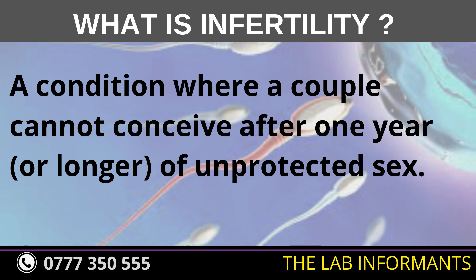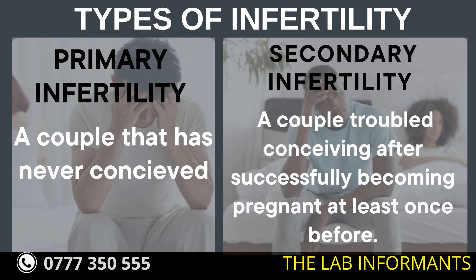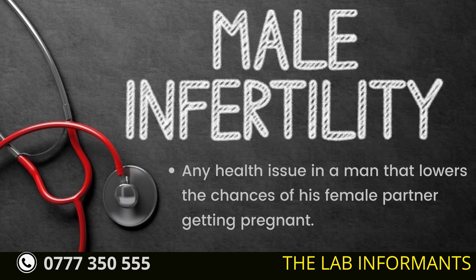By definition, infertility is a condition where a couple cannot conceive after one year or longer of unprotected sex. There are two types: primary infertility, where a couple has never conceived, and secondary infertility, where a couple has trouble conceiving after having successfully become pregnant at least once before.